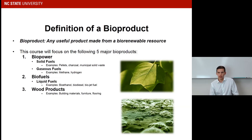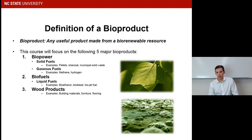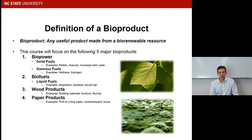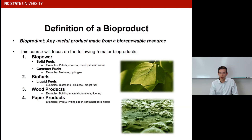Wood products are probably the most common bioproducts that we interact with on a daily basis. They include building materials, furniture, and flooring. Paper products are a really big deal in the state of North Carolina and also here at NC State University. They include print and writing paper, container boards such as cardboard, and many different valuable tissue products.